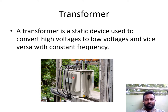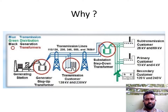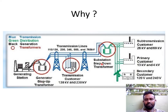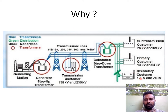This is one of the transformers that you come across near your homes, apartments, in your lane. We are looking at what a transformer basically is. Why do we need a transformer at the generating stations? In this diagram, the blue line represents the transmission, green represents the distribution, and black represents the generation. The circles represent the transformers. This is the generation station with the generator, step-up transformer, transmission, substation step-down transformer, and distribution. Sub-transmission customer 26 kV, 69 kV primary customer 13 kV, 4 kV secondary customer 120 volts, 240 volts.